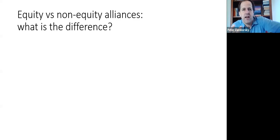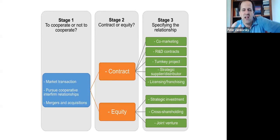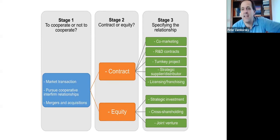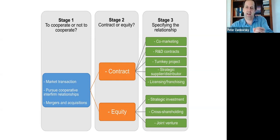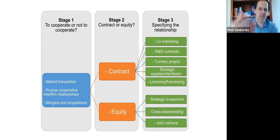These were equity joint ventures where Danone invested a particular share in legal entities operated under joint investment. But some alliances involve just a contract — no legal entity with 50/50 or 30/70 ownership. Contractual alliances include co-marketing, R&D contracts, turnkey projects, licensing, franchising, and strategic supply agreements. Equity alliances beyond joint ventures include strategic investments — for example, Singapore Airlines had a stake in Air New Zealand — and cross-shareholding, common in the airline industry.